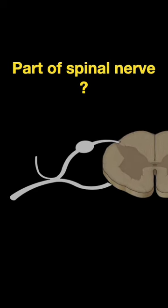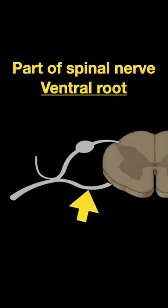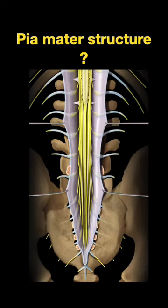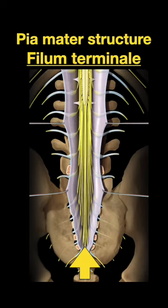Testing spinal cord and spinal nerves part B. What part of a spinal nerve is shown there? It's the ventral root. And what pia mater structure is indicated there? The filum terminale.